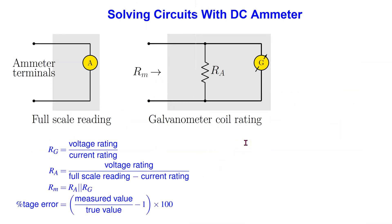In summary, in this video we have looked at how to solve circuits with DC ammeter. Since an ammeter is designed to measure current, it must be placed in series with the circuit element whose current is being measured. We have seen how to design the ammeter and how to work out the impact of the ammeter in the circuit being measured in terms of the percentage error. The two videos referred to in this video are linked here. Please watch them to further your understanding. Thank you for watching this video and subscribing to this channel.